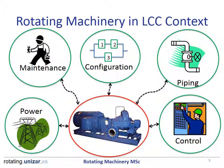This slide represents the interaction of the different systems with the rotating machine. We have the power systems, which we need to make sure have the capabilities to supply the right power to the machine. Maintenance systems need to support the machine, and the configuration will directly affect reliability. The piping will directly affect the sizing of the pump, and the control system will directly affect the performance and efficiency of the machinery system.